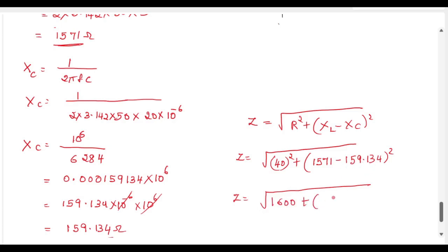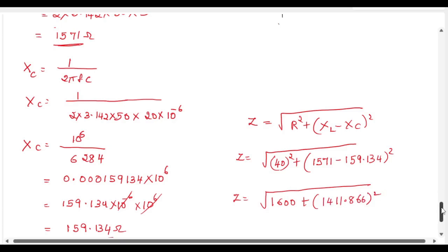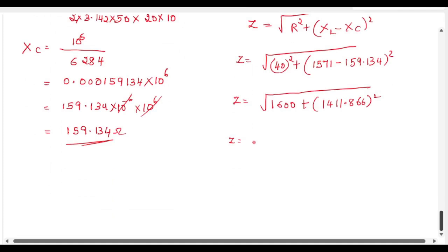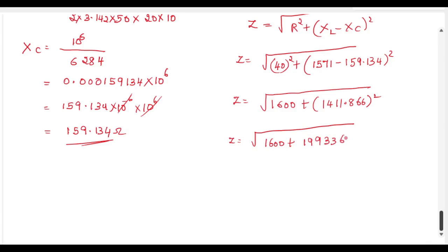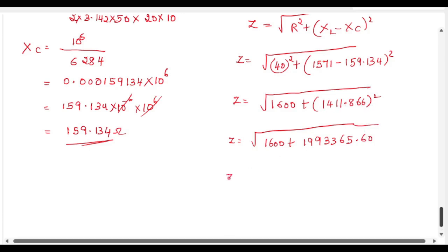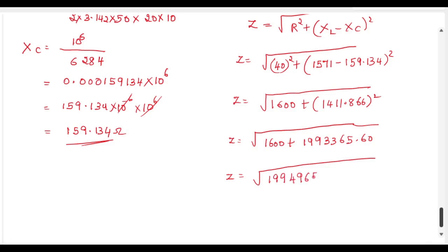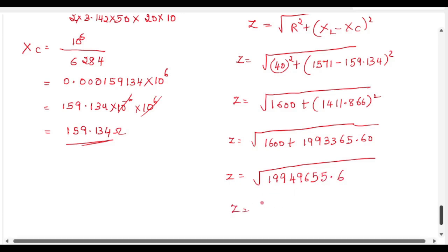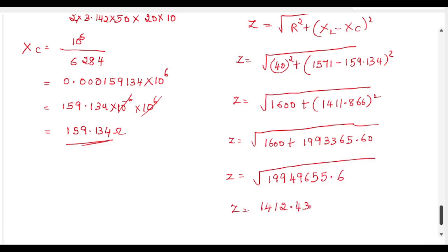So Z equal to root of 40 square, which is 1600, plus 157.1 minus 159.134, that is negative 2.034, the whole square. Adding these we get approximately 1604.14 under the root, giving Z equal to approximately 1412.43 ohms. This is the answer for impedance.